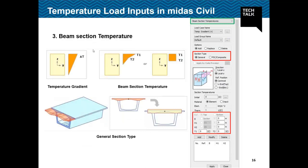Beam section temperature is used for nonlinear temperature gradient variation. Here you specify whether the section is defined using AutoCAD input (general section) or from the standard PSC section library (PSC composite). If the section is defined from the PSC library, the program internally converts the section into an equivalent rectangle and automatically calculates the equivalent width B at each depth for eigenstress calculation. If the section was created in AutoCAD, even if it is a PSC or composite type, you must use the general section option — the software does not know the width at each depth and you must input it manually.